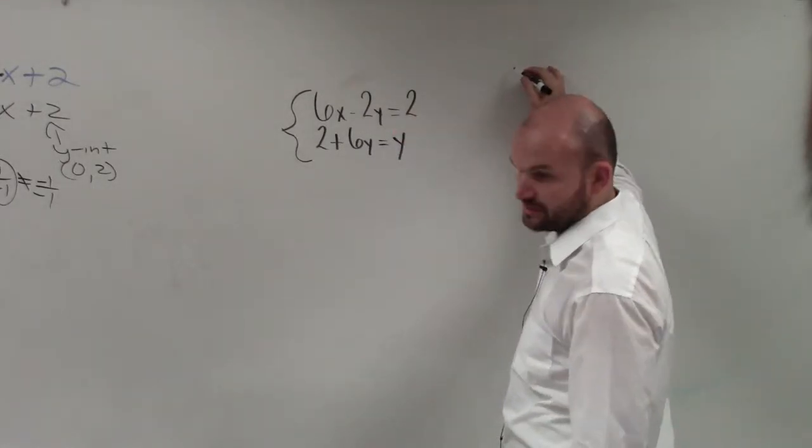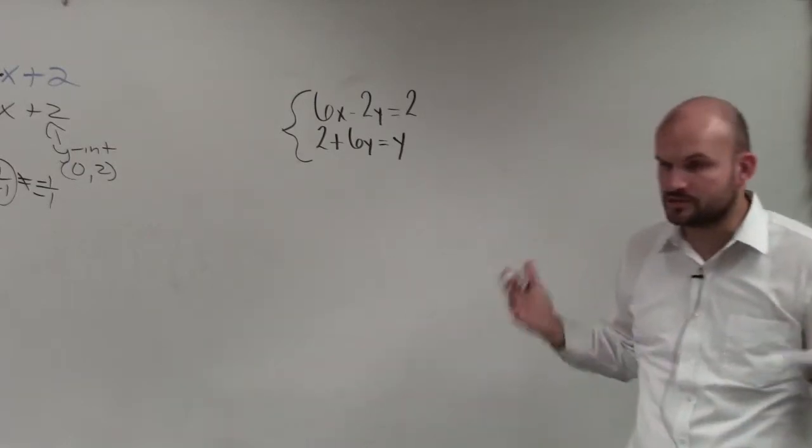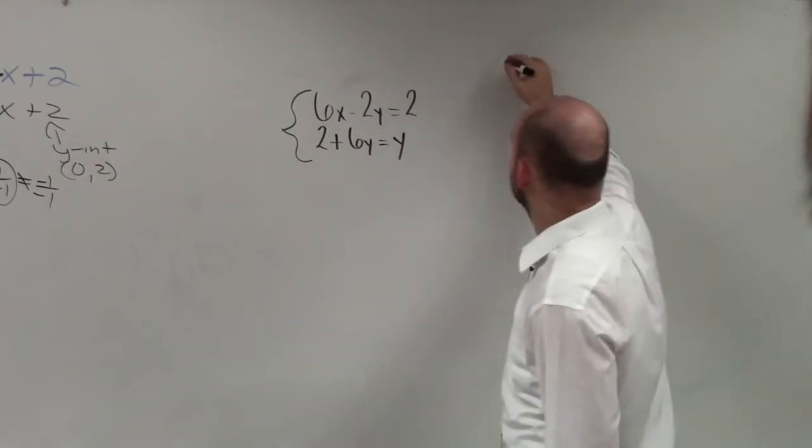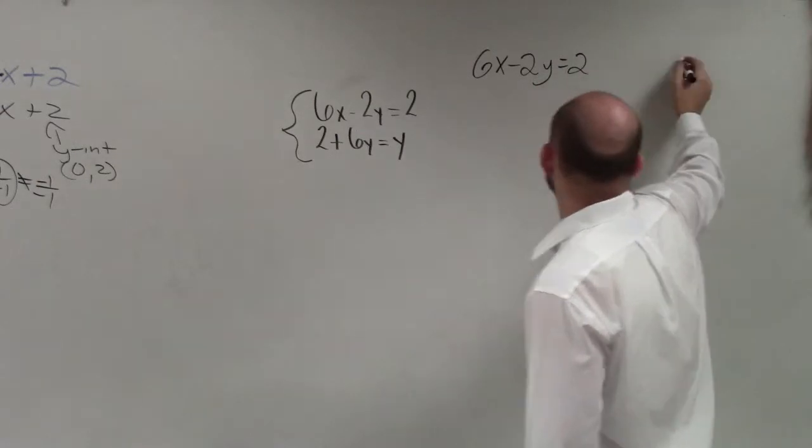So to graph them, basically what I'm going to do is there's two different ways we can graph. We can use intercept method or we can use slope-intercept method. I think the easiest thing for me to be able to do is rewrite these in slope-intercept form. So I'll write both equations and I will rewrite in slope-intercept form.